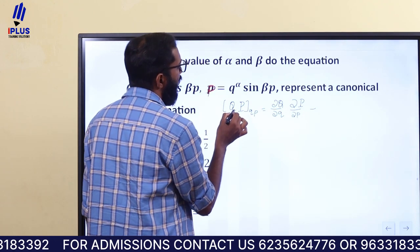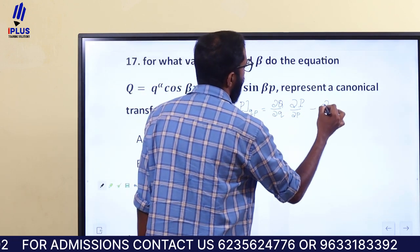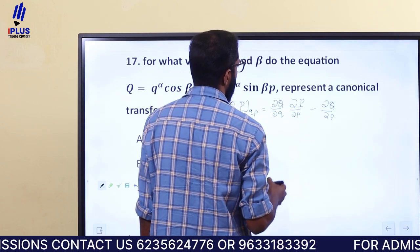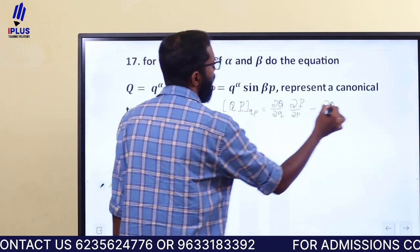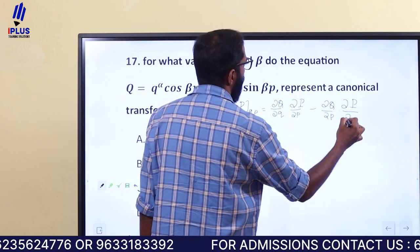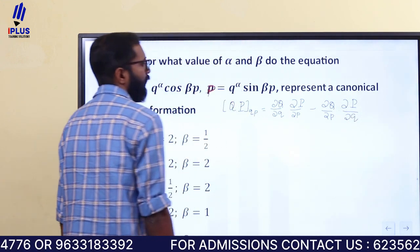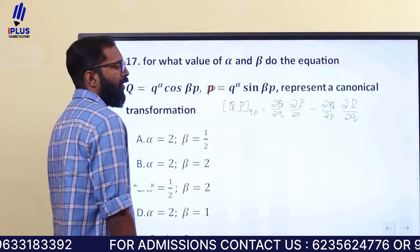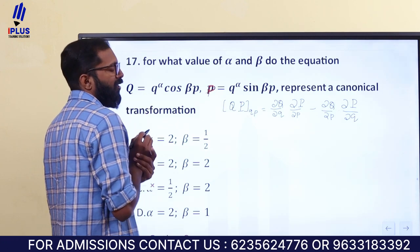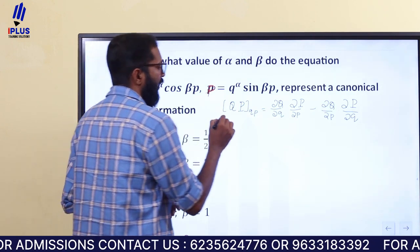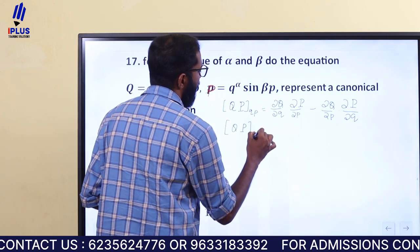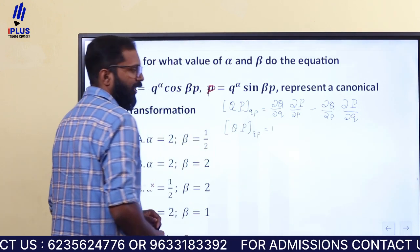Minus. So, dou Q divided by dou p, and dou P divided by dou q — the Poisson bracket {Q, P} is equal to 1. That's the condition.